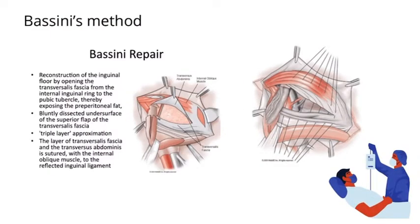Moving on to the more traditional methods of hernia repair: firstly, we have Bassini's method. In Bassini's repair, reconstruction of the inguinal floor involves opening the transversalis fascia from the internal inguinal ring to the pubic tubercle, thereby exposing the preperitoneal fat. Triple layer approximation: the layer of transversalis fascia and transversus abdominis is sutured with the internal oblique muscle to the reflected inguinal ligament.